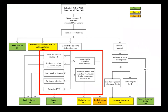Indications for early surgery in infective endocarditis: heart failure, resistant organism (Staph aureus or fungus), heart block or root abscess, persistent infection. A key guideline change: large mobile vegetation was downgraded from Class 1 to Class 2 indication for surgery. For patients with pacemaker or ICD lead/pocket infection, hardware removal is a Class 1 recommendation.